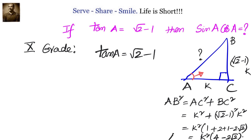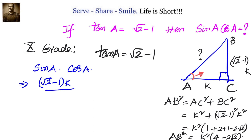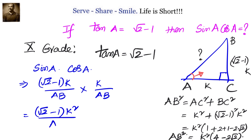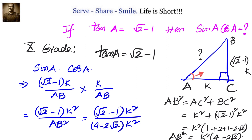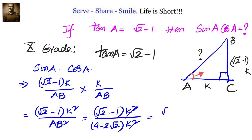Once we know AB square, let's find sin A into cos A. Sin A is BC by AB, and cos A is AC by AB. That's nothing but root 2 minus 1 into k divided by AB, multiplied with k divided by AB, which equals root 2 minus 1 into k square divided by AB square. We already know AB square equals k square into 4 minus 2 root 2, so we substitute that. Then k square and k square cancel out.